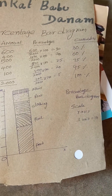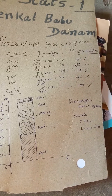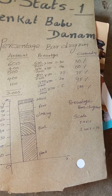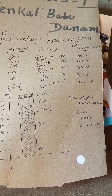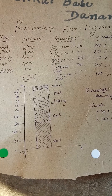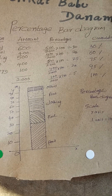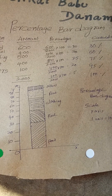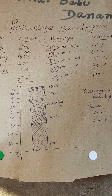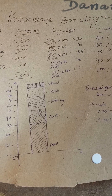Then it is better to take cumulative values: 30, 30 plus 20 is 50, 50 plus 25 is 75, 75 plus 20 is 95, 95 plus 5 is 100. Then you take a graph — on the graph it should be equal to 100.